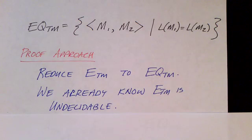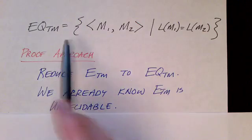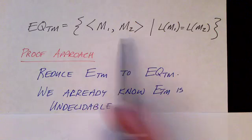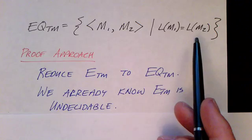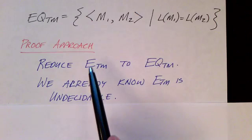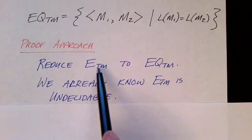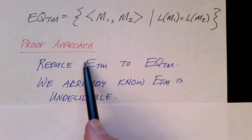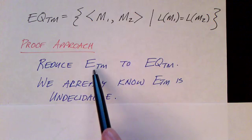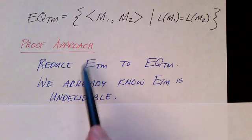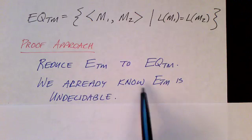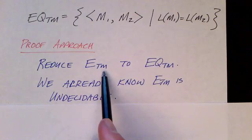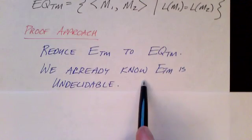Here's our language — the equivalence of two Turing machines — and we want to prove that this problem is undecidable. Our proof approach is going to reduce the emptiness problem for Turing machines to the equivalence problem for Turing machines. Before, we were reducing the acceptance problem for Turing machines to something; now we're reducing a different problem that's already known to be undecidable. In our previous video we showed that ETM is undecidable, and now we're going to reduce ETM to EQTM to show that EQTM is undecidable.